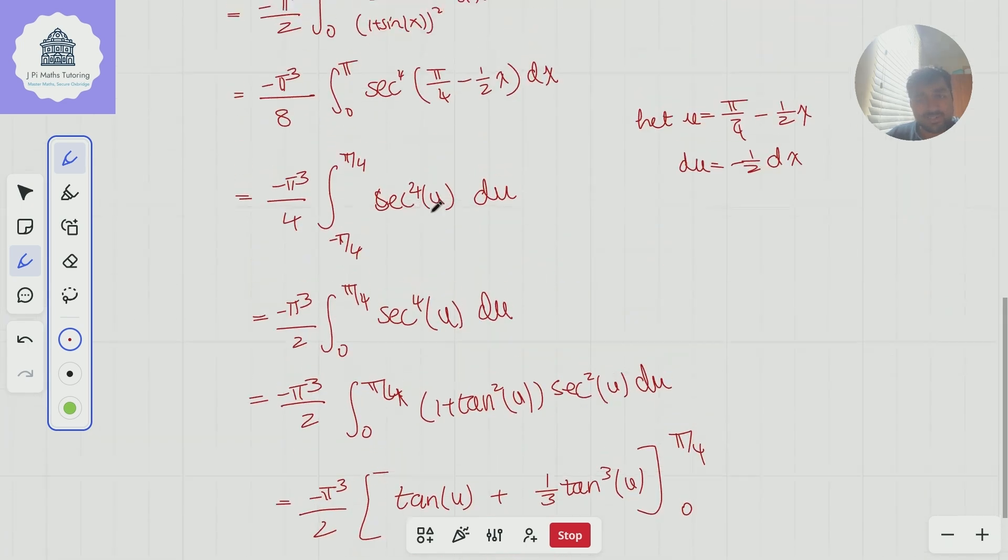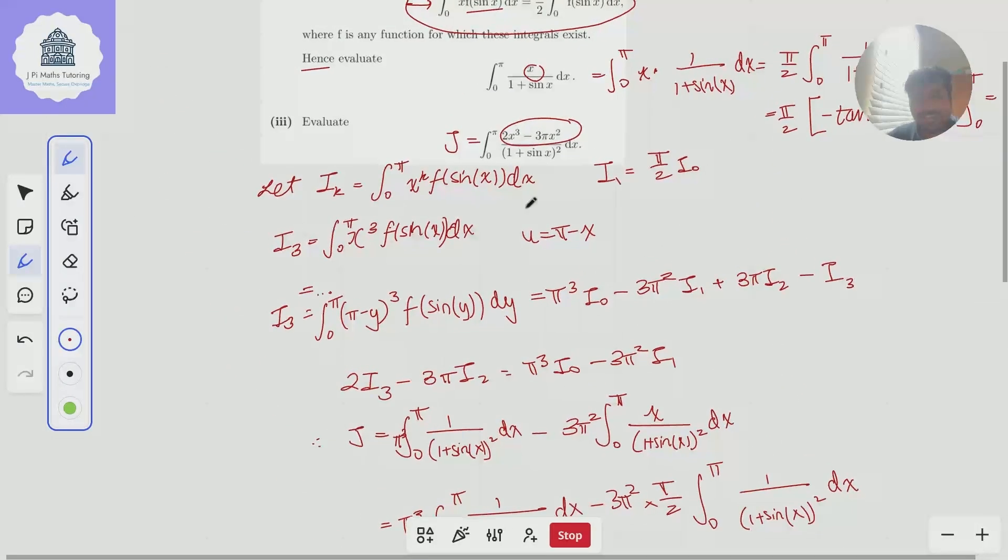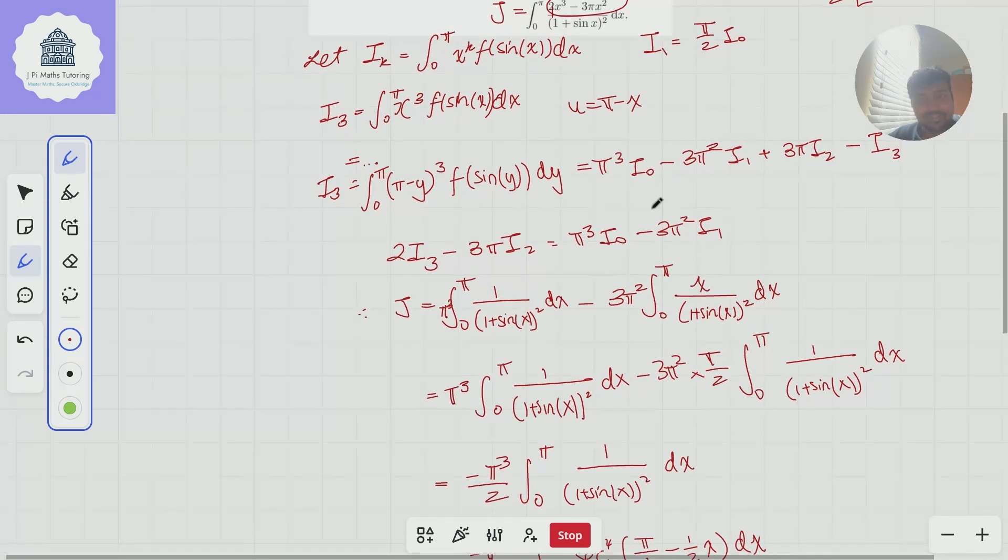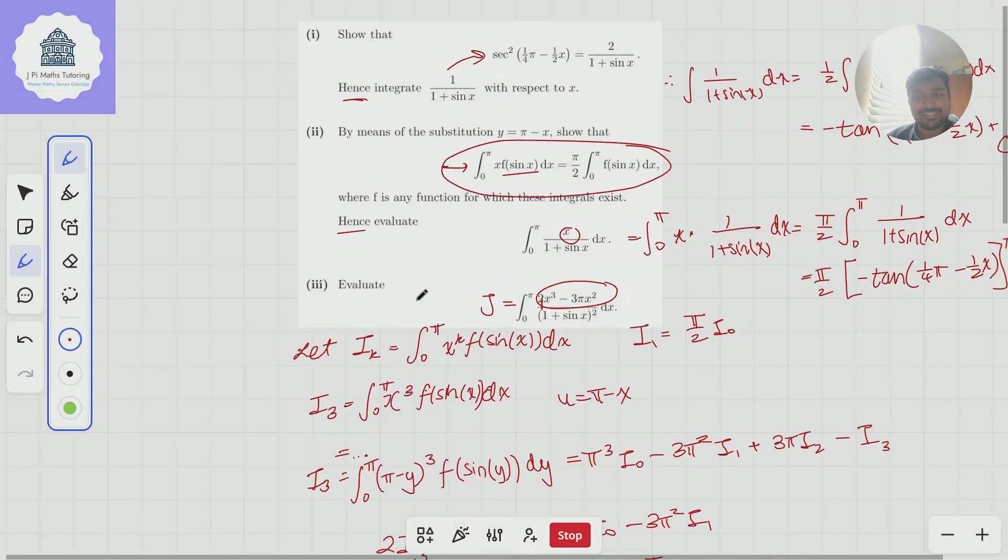A really nice result, if you ask me, using a really nice trick and using it multiple times in a really elegant way. This question becomes obviously a lot more difficult if I change this 2 here to a 4 or something or any other number, because this trick here works out really nicely that we've got 2 minus 3π here, which is required for this integral. But a very nice trick nonetheless.